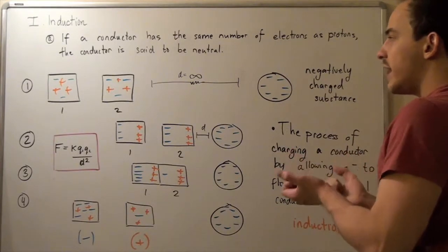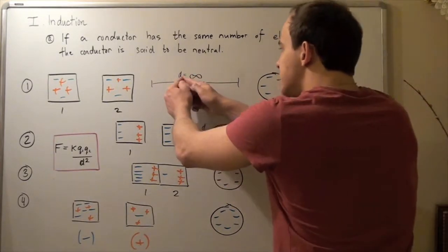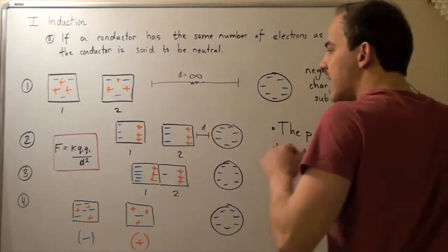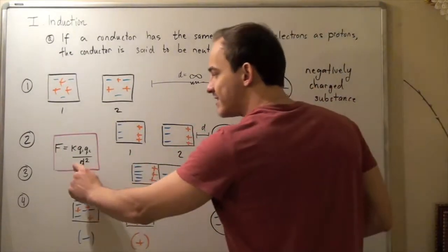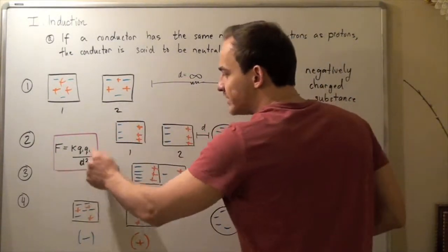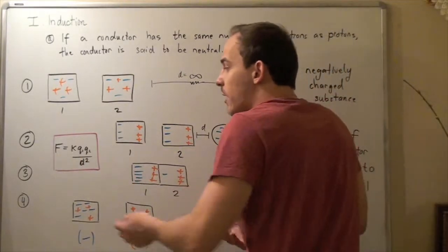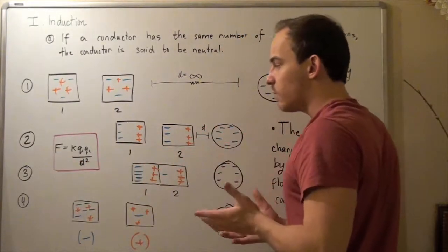That's because we're making the assumption that our distance between them is infinity. According to Coulomb's law, if our distance is infinity, then our denominator is very large and so our force goes to zero.